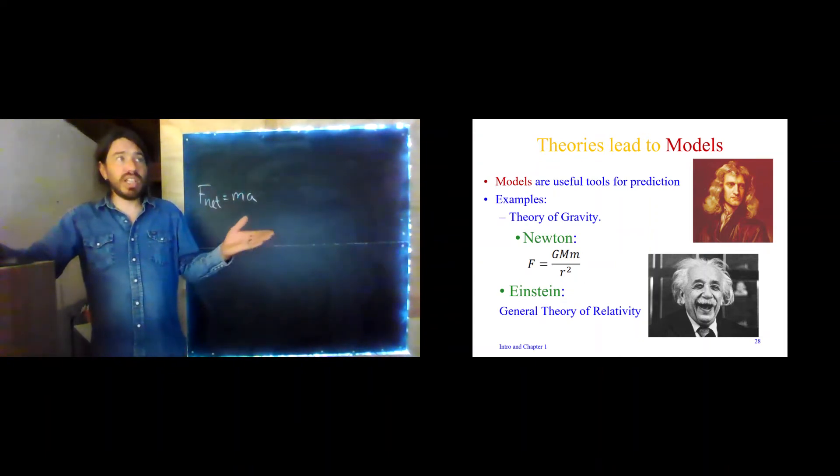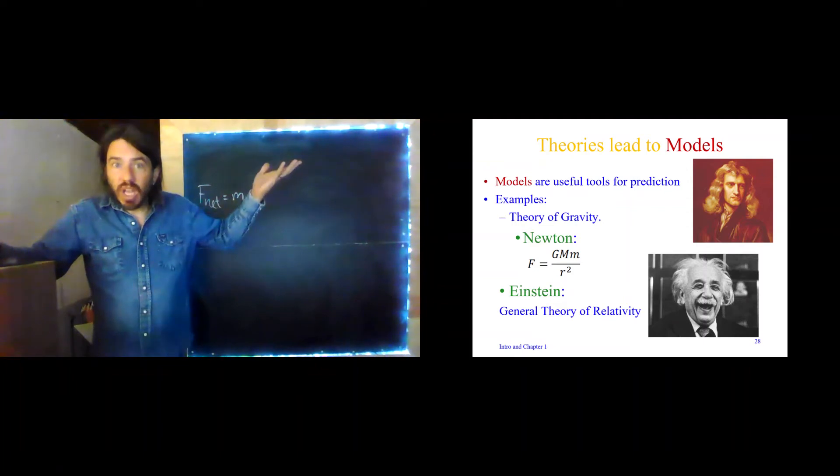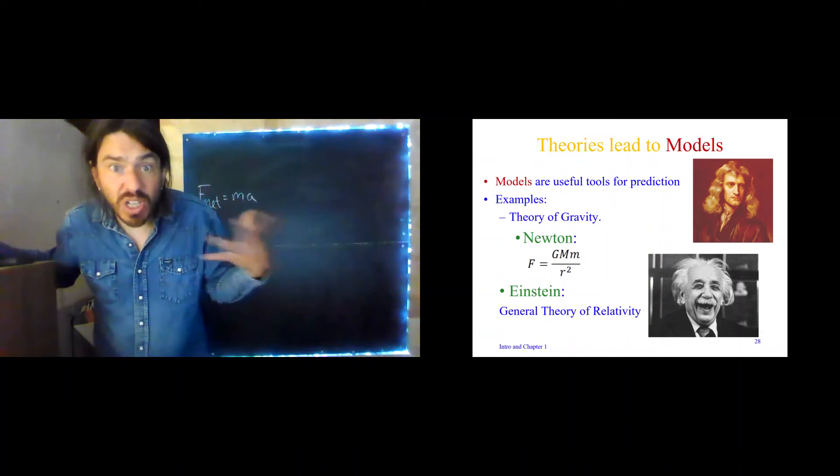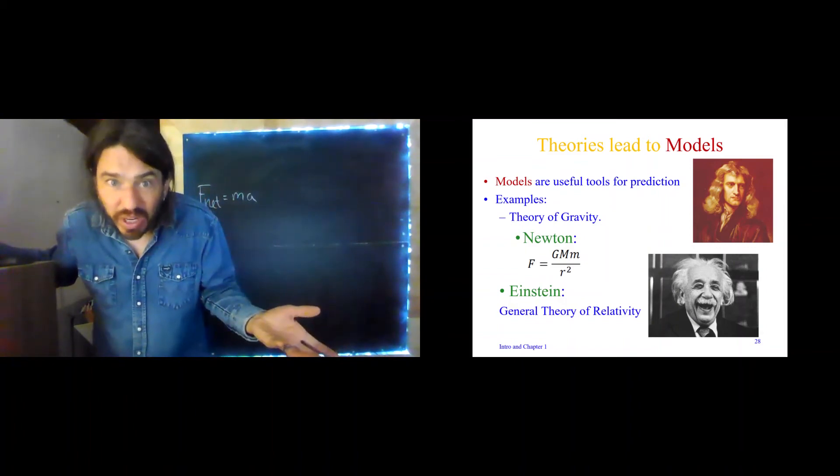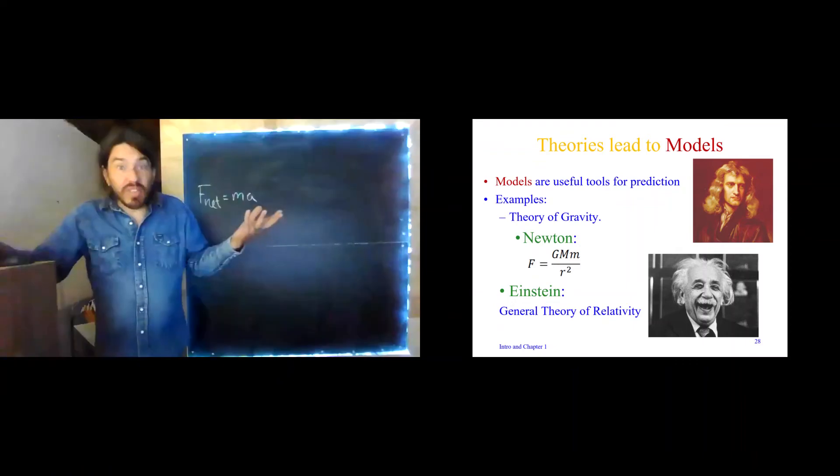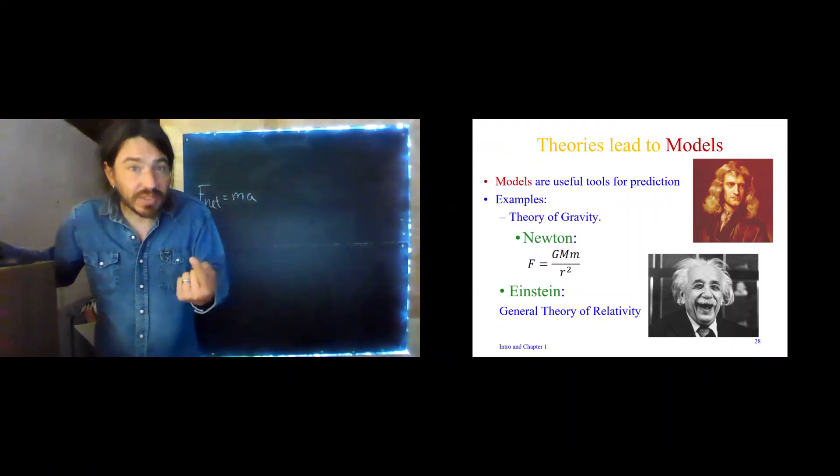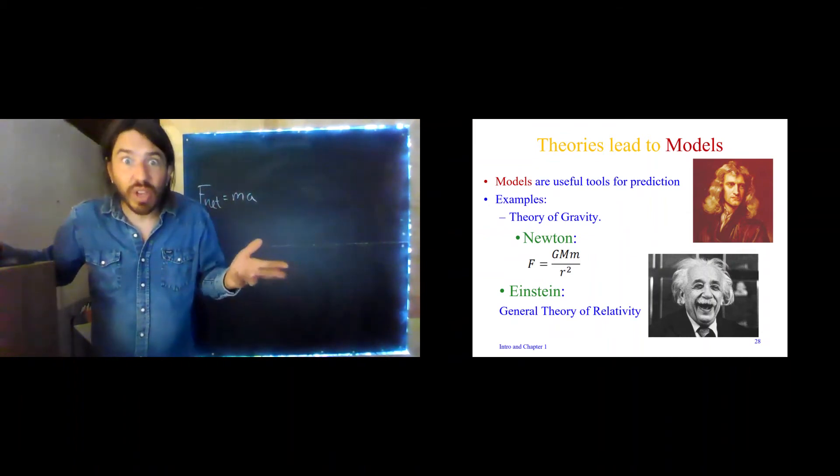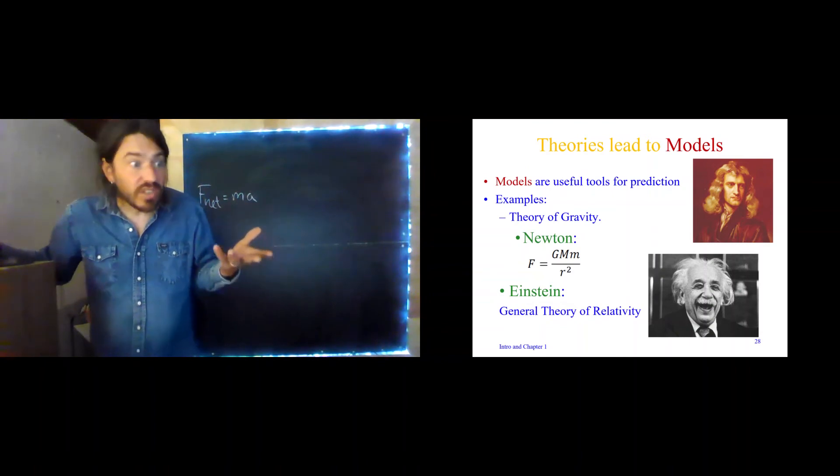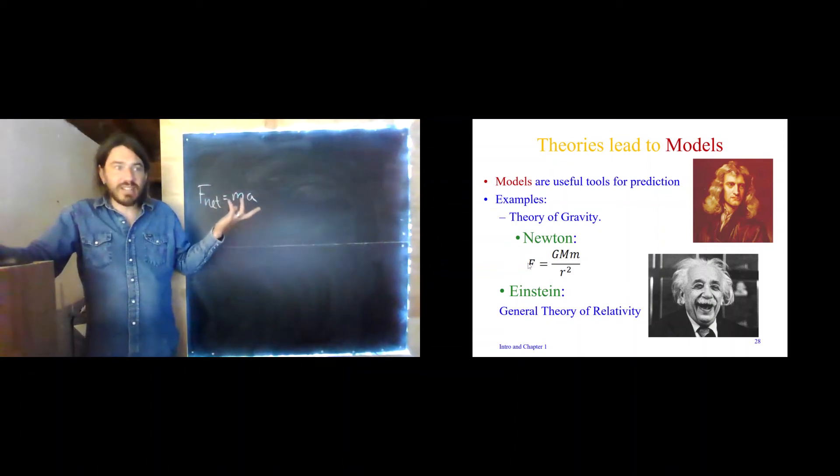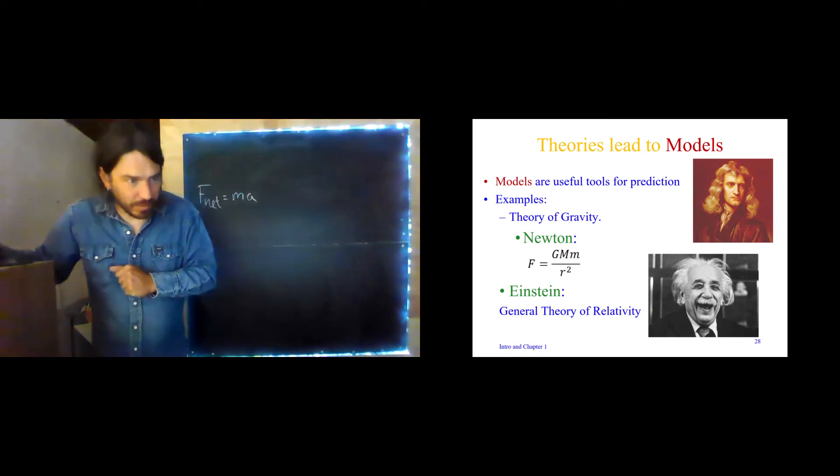You can land a person on the moon using Newton's theory of gravity. It works fantastically. But it doesn't work everywhere. It turns out it's not good enough to predict the motion of Mercury over long periods of time. Over short periods of time it does fine. Over long periods of time we find errors. We find it is not perfect. Newton's theory of gravity, which we will learn about in a few chapters, it's a fantastic theory. It's not perfect. It's not truth with a capital T. It works with a capital W.